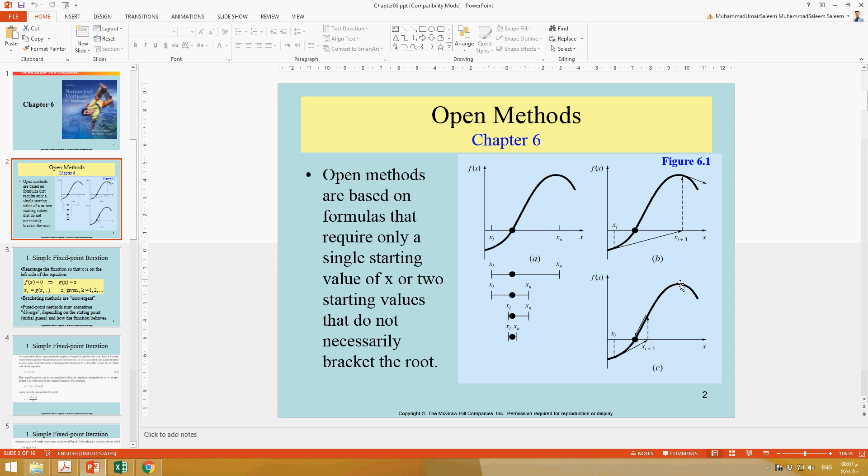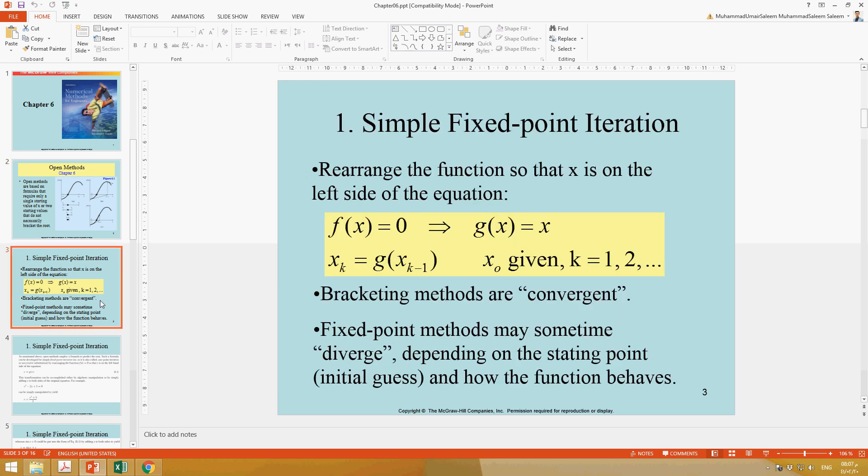The first method is simple fixed-point iteration. In simple fixed-point iteration method, we have a function f(x), we make it equal to zero, and then we find out the solution of x from that function itself.